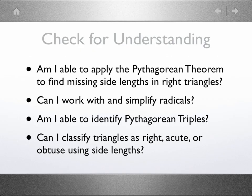Just to summarize, I went back to our objectives and I phrased them in the form of a question. And I want you to be sure that you're able to apply the Pythagorean theorem and find the missing side lengths. Are you able to work with and simplify radicals? Are you able to identify Pythagorean triples? And can you confidently classify triangles as right, acute, or obtuse using side lengths?